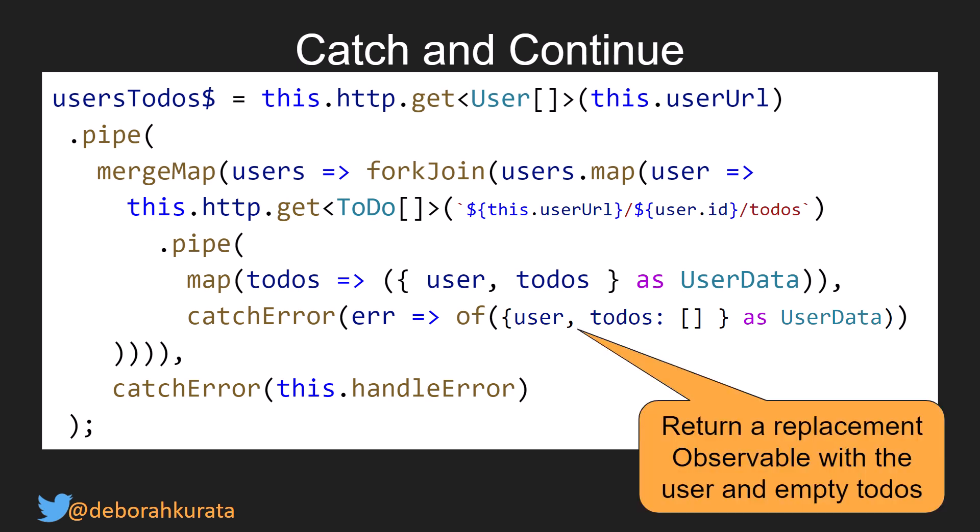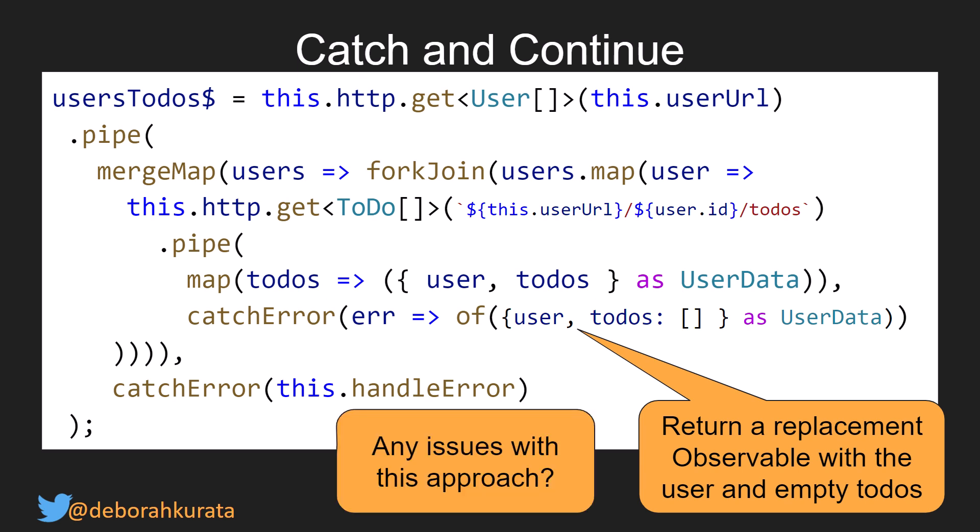We catch and continue by returning a replacement observable with the user and, in this case, empty to-dos. One issue is that the template has no way to know whether the empty to-dos are because the user actually has no to-dos, or if an error occurred and the system couldn't get them. In real applications, it's often important to understand the difference between no data and not being able to get the data.